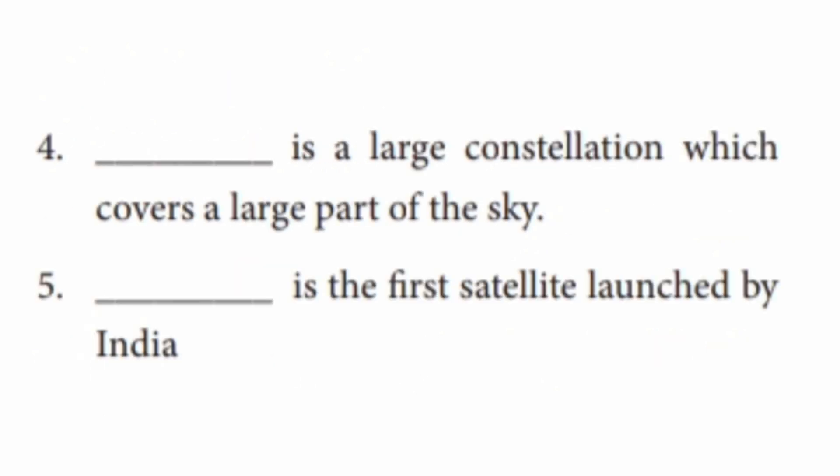Question 9: Which is a large constellation that covers a large part of the sky? The answer is Ursa Major. Ursa Major is a large constellation which covers a large part of the sky.